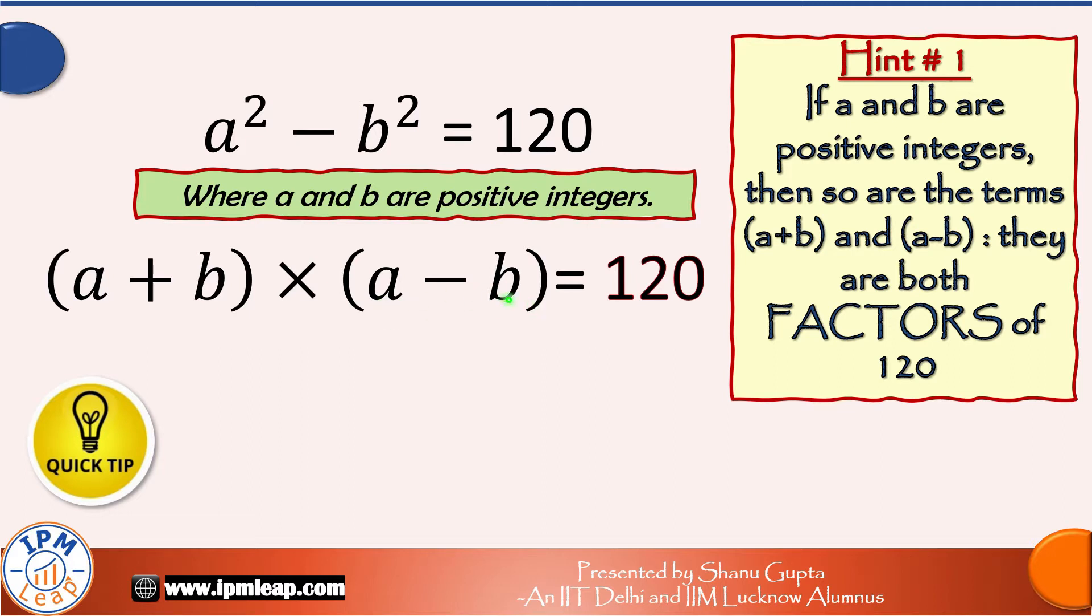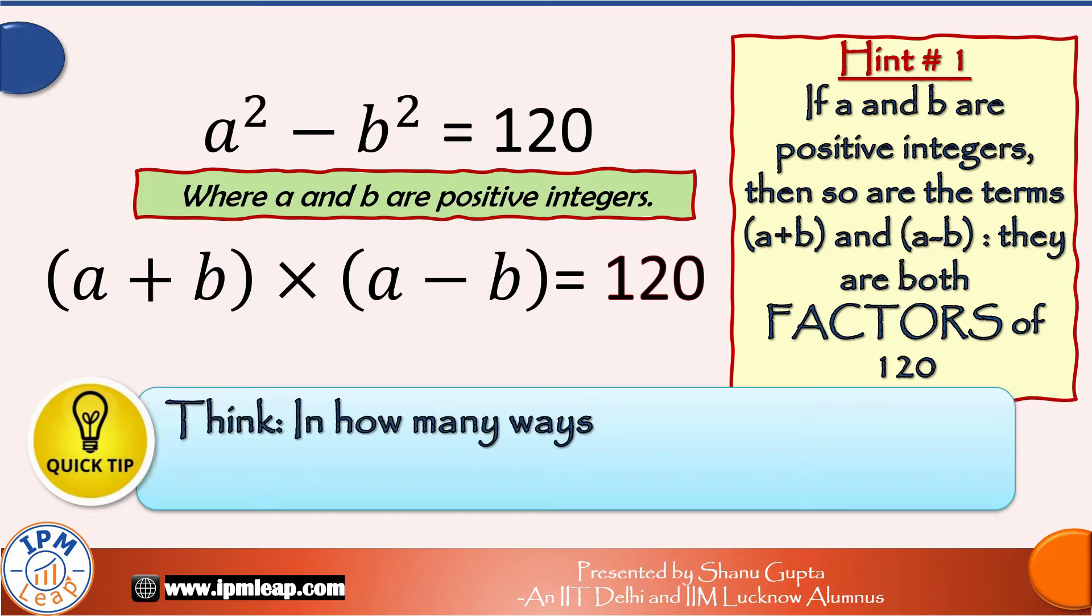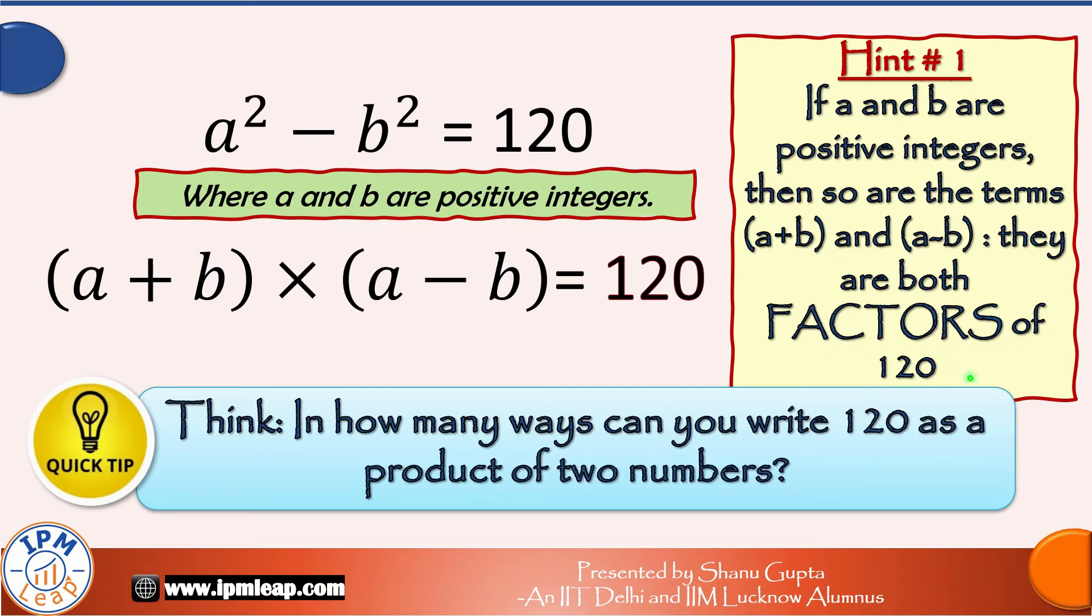That means the terms a plus b and a minus b are countable numbers and the product of these two terms is 120. Clearly the terms a plus b and a minus b are factors of 120. So think in how many ways can you write 120 as a product of two numbers? Think, how many factors are there for the number 120?